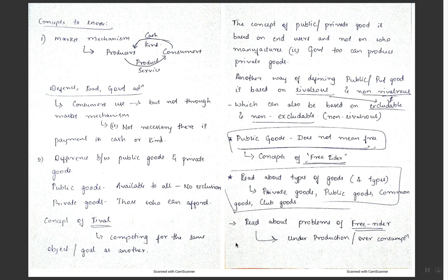We are looking into chapter 5, where we are discussing the allocation function of government budget. We've covered the concept of budget, or if you haven't yet, you will be covering it in Indian polity in the Lakshmikanth chapter. Here we'll stick to the economic concept of it.